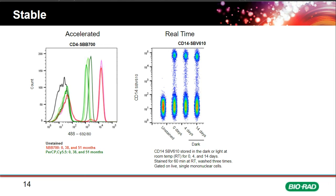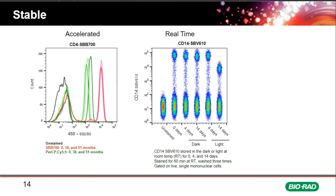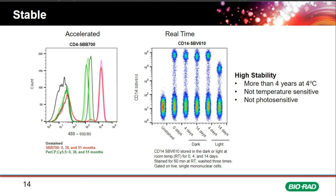Real-time stability data showed that an antibody master mix left on the bench in the dark for up to two weeks gave identical staining to a freshly prepared sample on human CD14 peripheral blood. Left in the light, there was no reduction after four days, with reduction only appearing at 14 days. This indicates Star Bright dyes have stability equivalent to more than four years at four degrees, are not temperature sensitive, and are not particularly photosensitive.